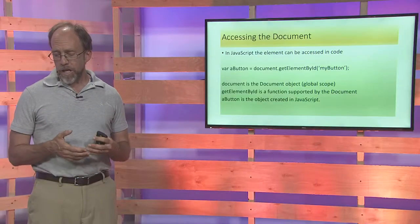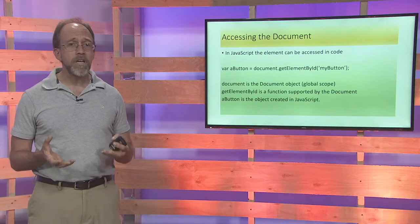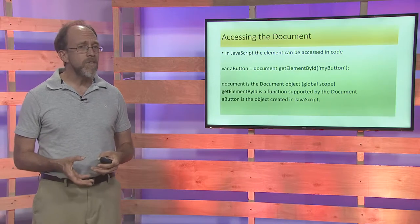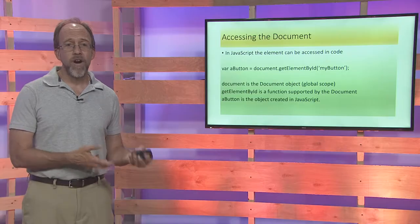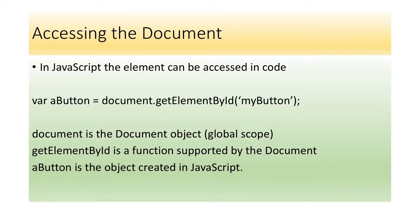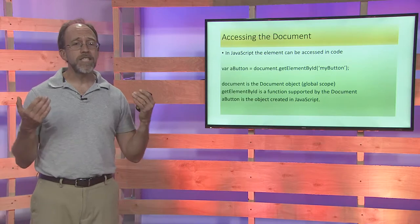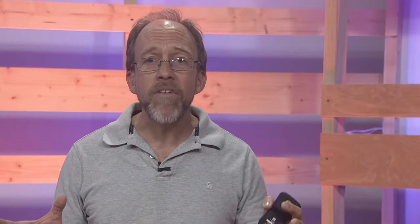To access this object which lives inside the document, we start writing some JavaScript code. In JavaScript, everything is an object. You've probably defined variables before, but in JavaScript I'm not going to define any specific variable type — I'm just going to call everything a var. When you define a variable using var, you're defining that variable as an object. So I'm going to say var aButton, and I'm going to set it equal to — well, document is this global object that's accessible to you in JavaScript code that represents the entire page.